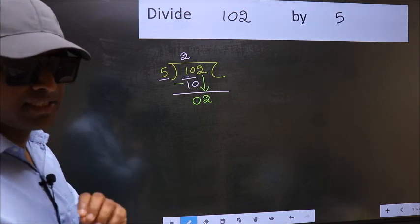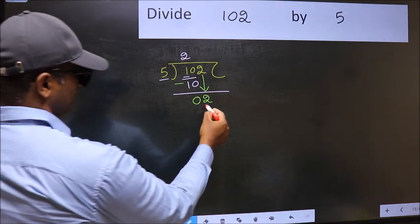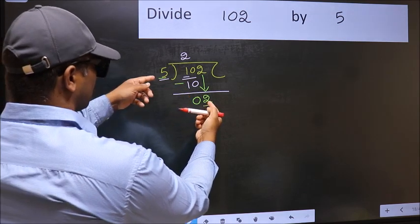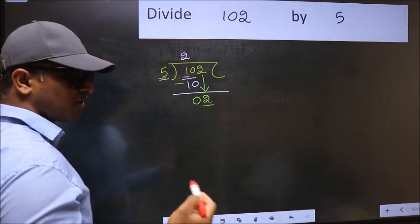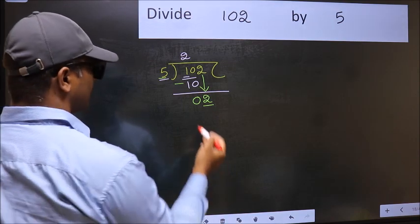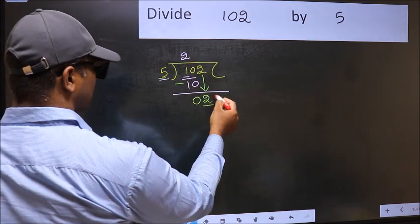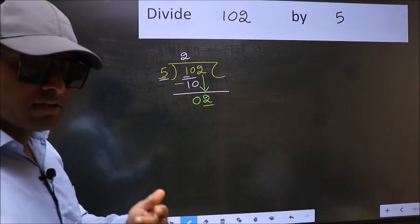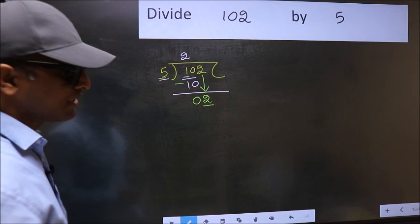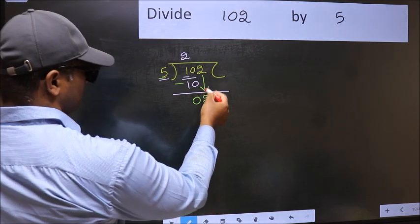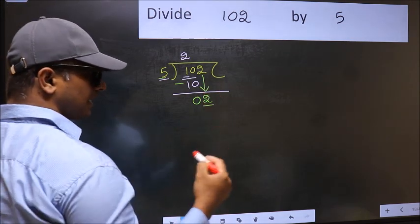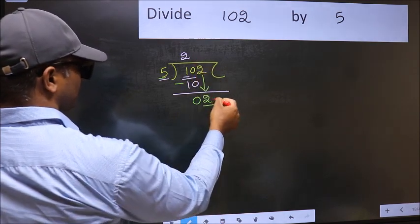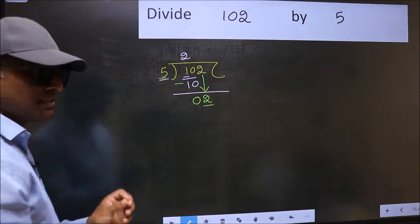And the mistake is this. Here we have 2 and here 5. 2 is smaller than 5. So what many do is they directly put dot and take 0, which is wrong. Why is it wrong? Because just now you brought this number down, and in the same step, you want to put dot and take 0, which is wrong.